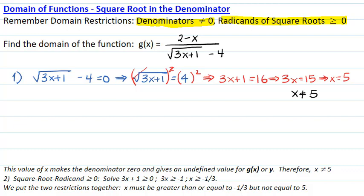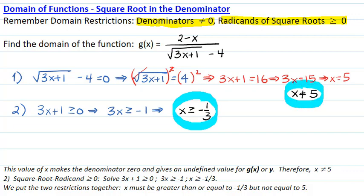Our second restriction is that the radicand must be greater than or equal to zero. This means 3x plus 1 greater than or equal to zero, or 3x greater than or equal to negative 1, or if I divide by 3, x greater than or equal to negative 1 over 3. By putting both restrictions together, I'm looking for values of x that are greater than or equal to negative 1 third but not equal to 5.